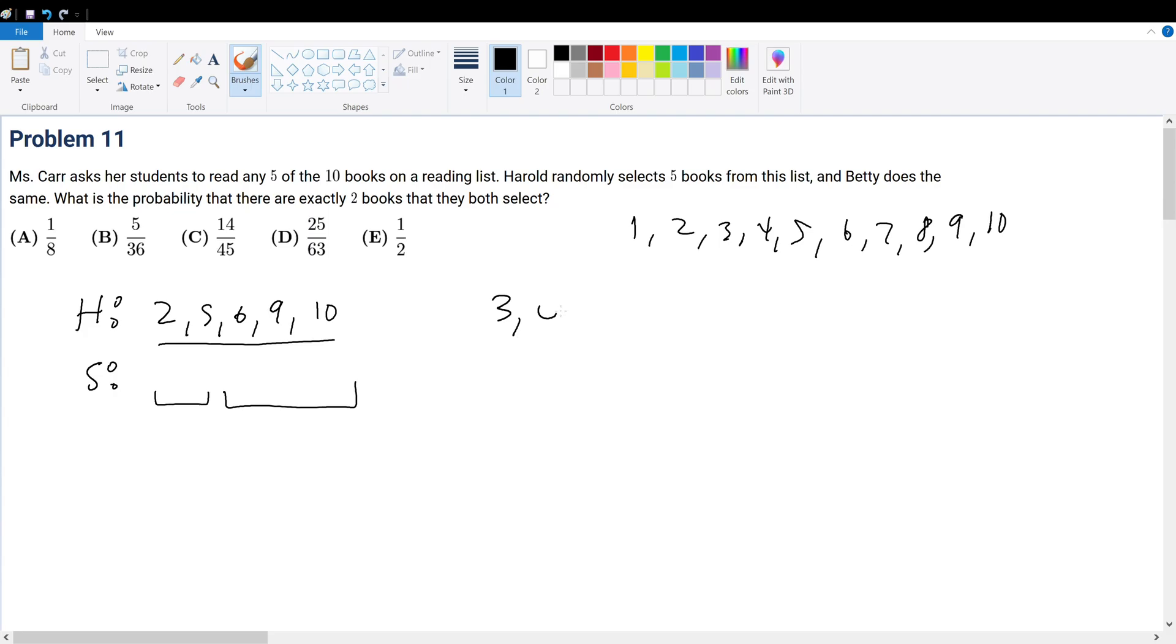Which is 3, 4, 7, 8, and 1. So Susan must pick 2 from here and pick 3 from here in order to satisfy that there are exactly 2 books that they both select. That's fancy words for saying 2 books that Harold has read and 3 books that Harold has not read.